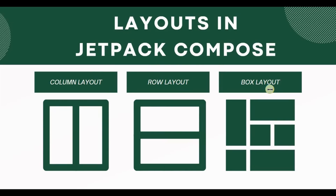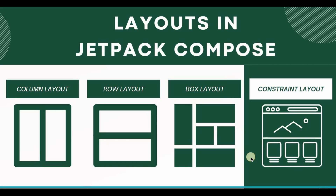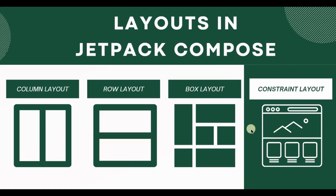In Jetpack Compose we have Column layout, Row layout, and Box layout. So where does ConstraintLayout come from? It's an additional layout that can be used by adding an external dependency. In Column layout, two components are above or below each other vertically. In Row layout, components are beside each other horizontally. In Box layout, components overlap each other. In ConstraintLayout, components can be linked to each other horizontally as well as vertically.